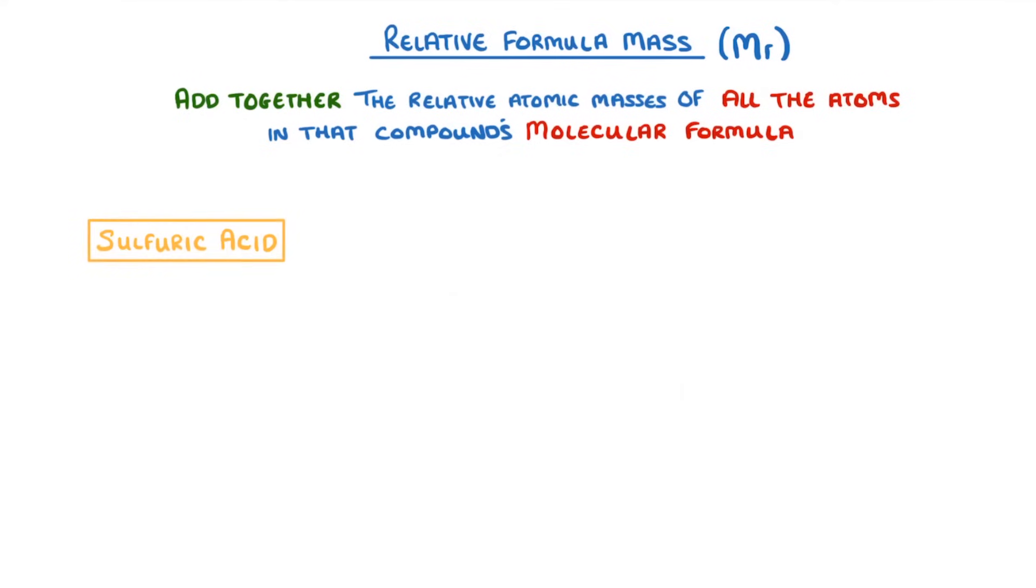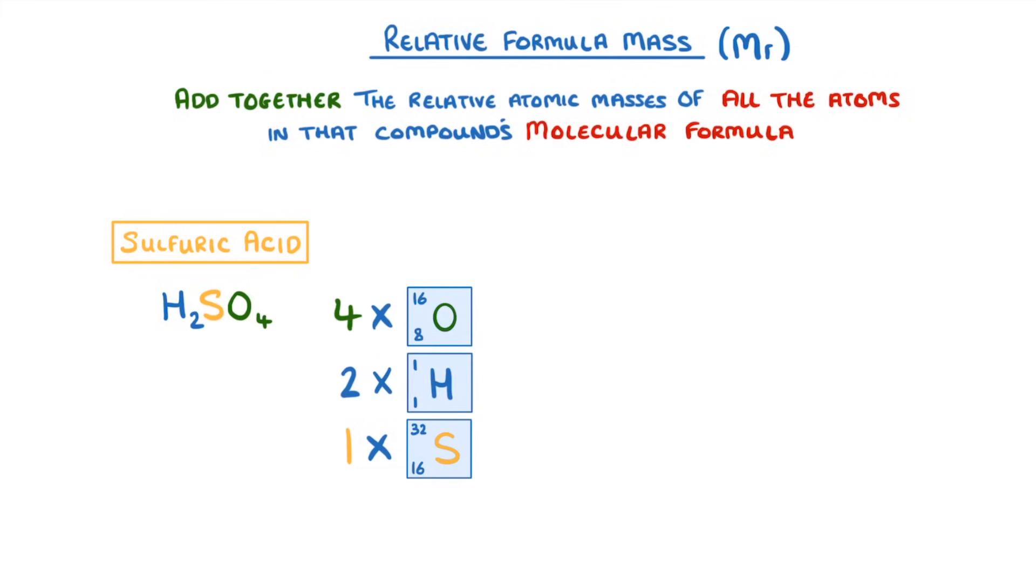Or for sulfuric acid which is H2SO4 we have two hydrogens one sulfur and four oxygens, so 2 times 1 plus 1 times 32 plus 4 times 16 which gives us a total of 98. So the Mr is 98.